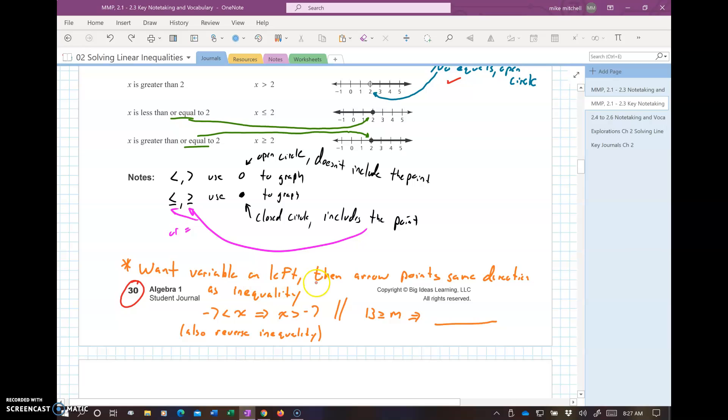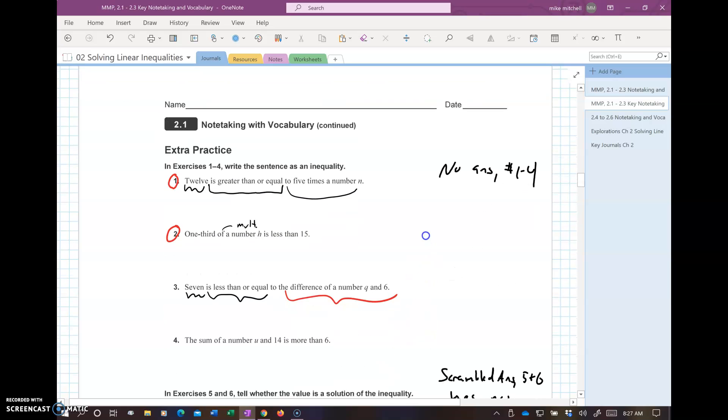Another thing here. You want your variable on the left. The arrow points the same direction as the inequality. So, we don't want to write negative 7 less than x. We want to turn everything around. x is greater than negative 7. Notice we also reversed the inequality. The way you can think of it: points at the negative 7, open at the x. We still want open at the x. So, try changing this one over here. 13 greater than or equal to m. What does that change to? That's going to be m less than or equal to 13.